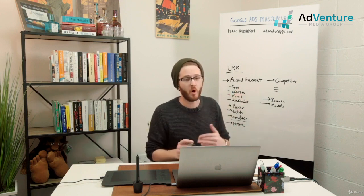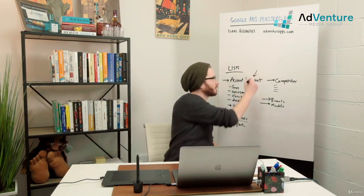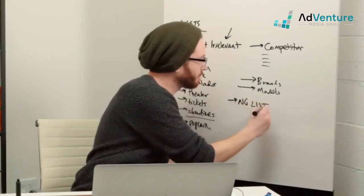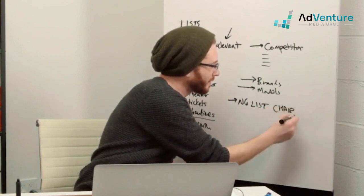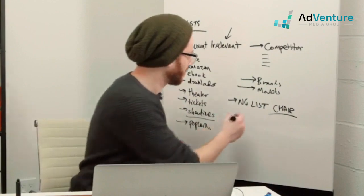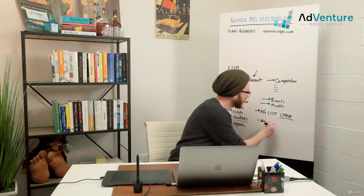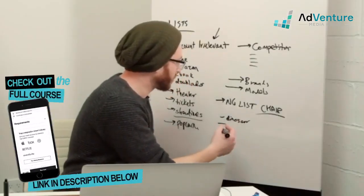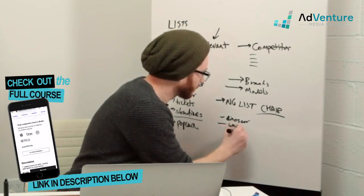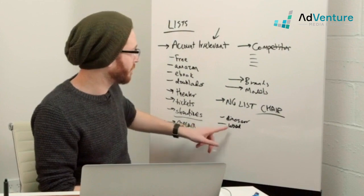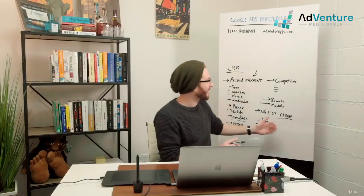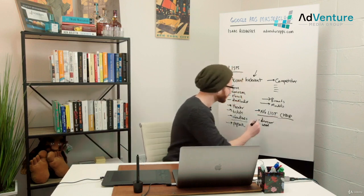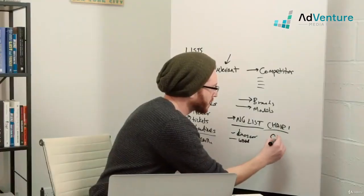The only use of negative keyword lists isn't just account irrelevant terms. For example, say we have a negative keyword list applied to all our chair campaigns. Let's say we don't sell wood chairs but we do sell wood desks. These wouldn't be account irrelevant terms, but instead of having to add them manually to every individual campaign, I could have one shared negative keyword list and apply it to all my chair campaigns.